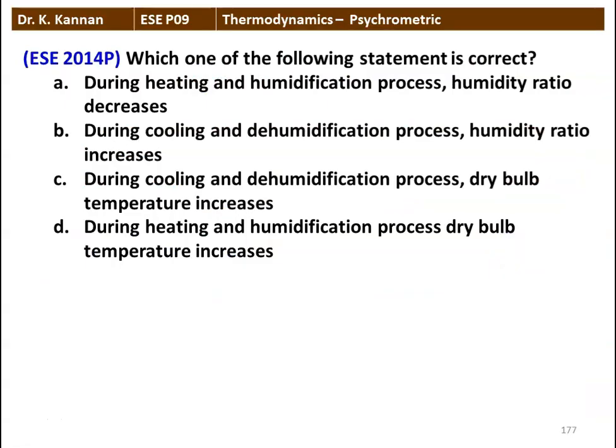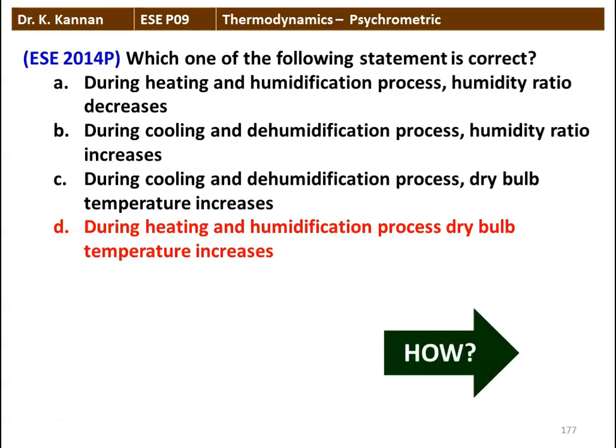The first question: which one of the following statements is correct? During heating and humidification process, humidity ratio decreases. During the cooling and dehumidification process, humidity ratio increases. During cooling and dehumidification process, dry bulb temperature increases. During heating and humidification process, dry bulb temperature increases. The correct statement is: during heating and humidification process, dry bulb temperature increases. We will see how in the next slide.